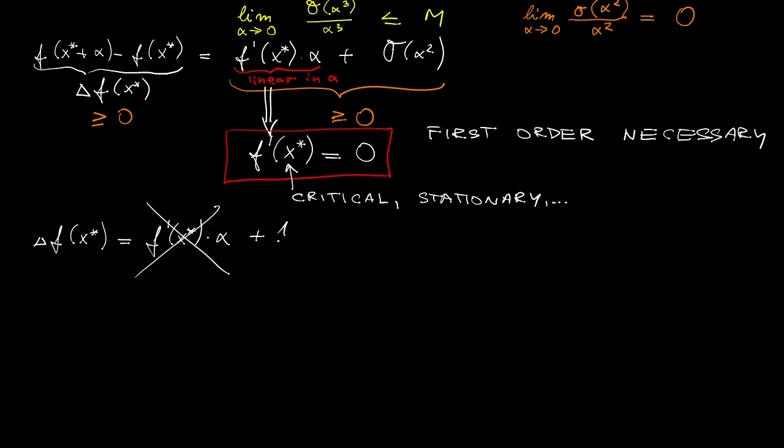Now that we have learned something about the first derivative—we have learned that it must vanish—we can also learn something about the second derivative. In particular, we can argue that in the Taylor expansion, the sum of the second order term and the higher order term must be non-negative.